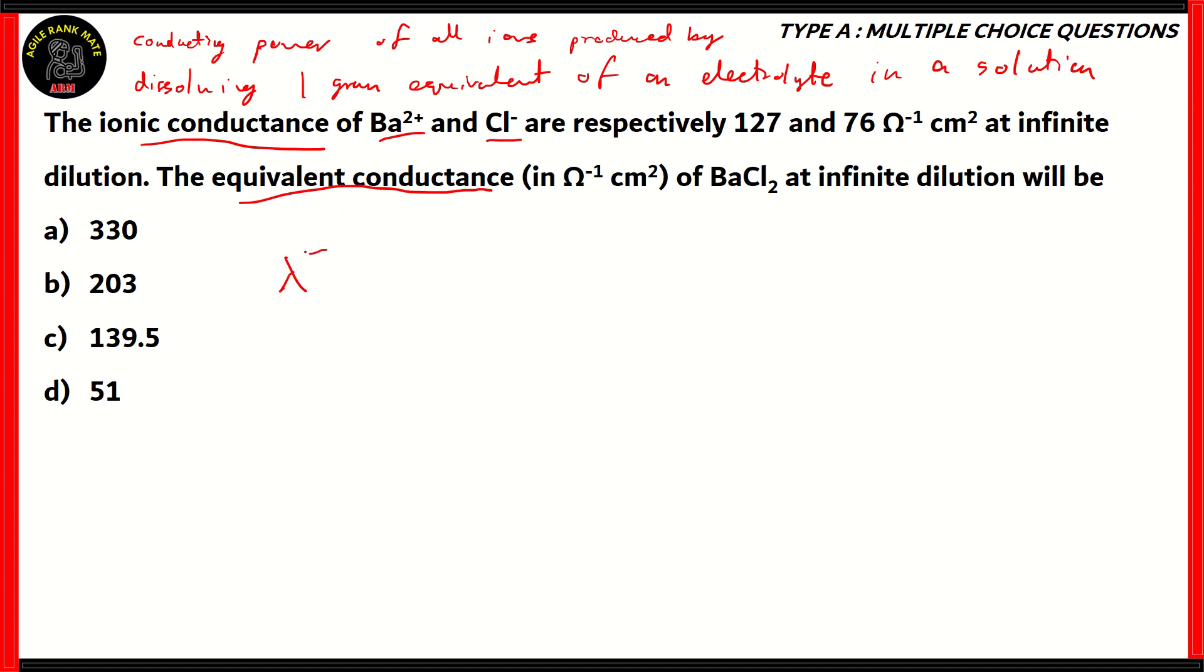We're given the ionic conductance of Ba2+ and Cl-. So basically, we can find conductance at infinite dilution for BaCl2, which is adding the ionic conductance of Ba2+ and the ionic conductance of Cl- multiplied by 2. So basically, that accounts for 127 plus 2 times 76. 76 times 2 is 152.